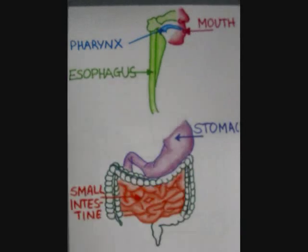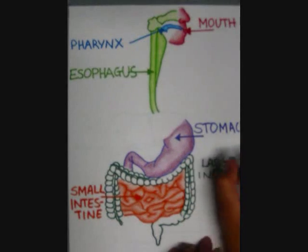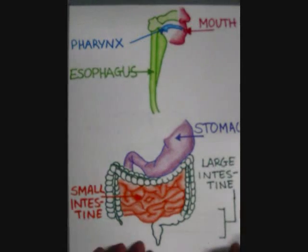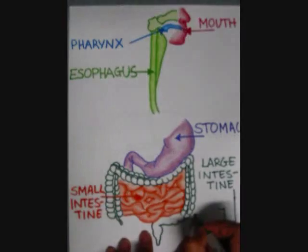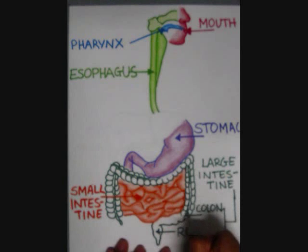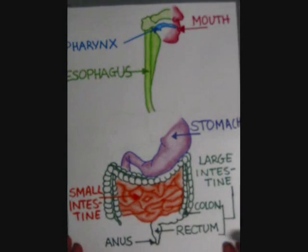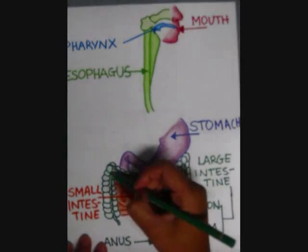Next is the large intestine. Its function is to absorb water from the remaining indigestible food matter and then to pass useless waste material from the body. The large intestine consists of the cecum and colon.